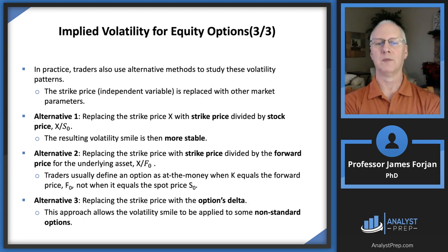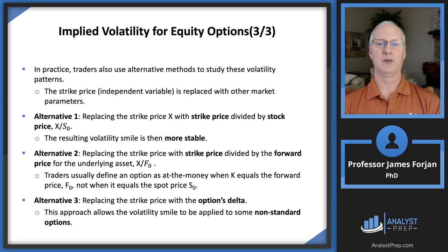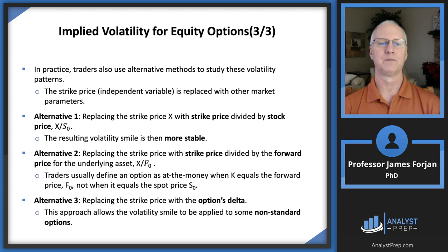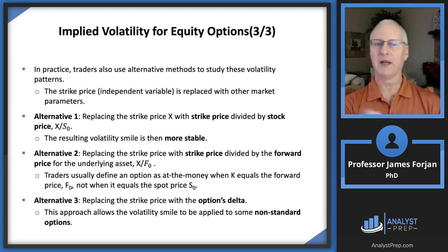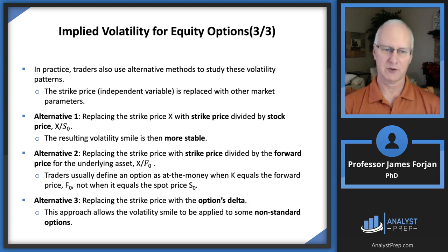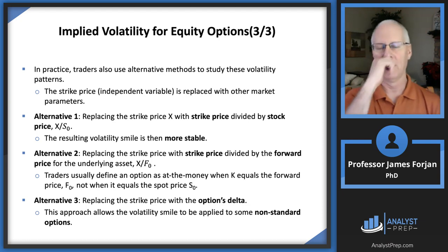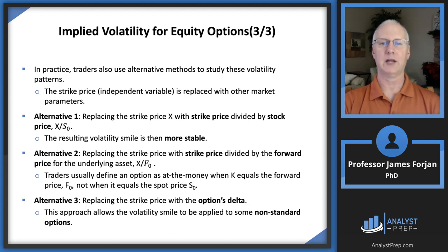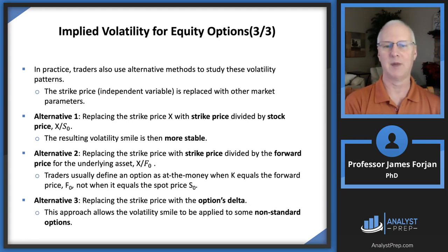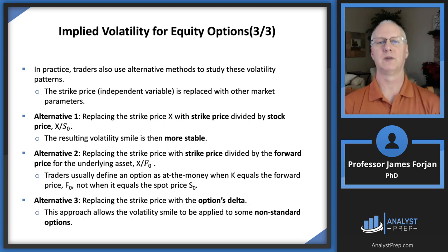Alternative two: replace the strike price with the strike price divided by the forward price for the underlying asset. The strike price is given by the exchanges or the writer of the option, and the stock price is determined on the floor of the New York Stock Exchange and changes every day. Instead of using today's stock price, we compute the forward price, because on the expiration date of the option, the forward price is what you expect to pay when you buy the option today. This is likely to give us a better estimate.